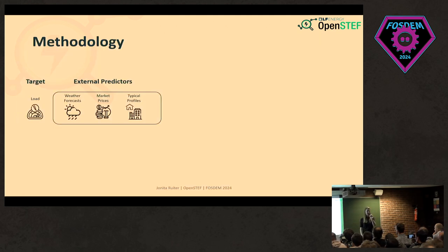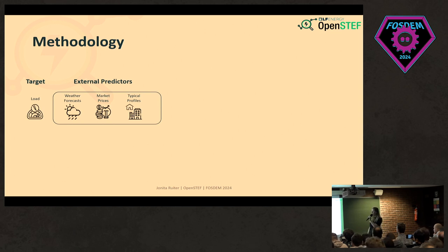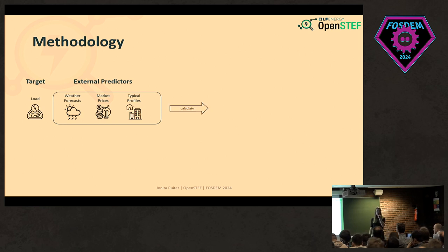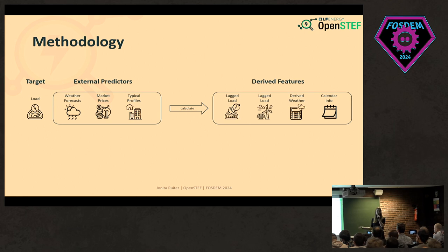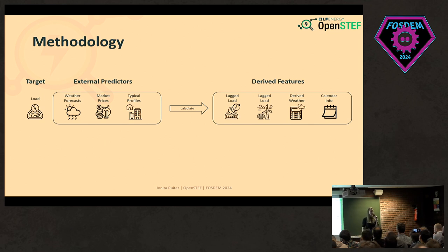Let's look at the methodology on a high level. On the left we have our target load — this is what we actually want to forecast. Then we have external predictors: our weather forecast, market prices, and typical profiles of companies and households. From these external predictors, we calculate our derived features — the feature engineering I mentioned: lag loads for each timestamp, derived weather features such as wind speed at the height of a windmill, and calendar info. It really matters if you are forecasting on a Sunday or Christmas compared to a Monday.